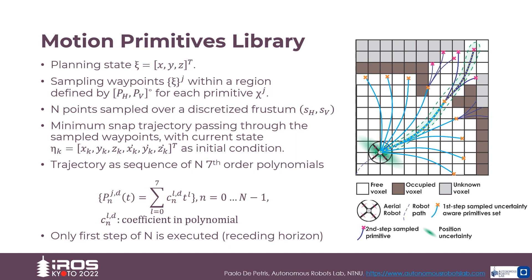Subsequently, each motion primitive is generated by calculating a minimum snap trajectory passing through these waypoints, using the current position and velocity of the robot as initial state.